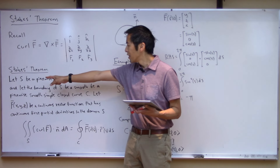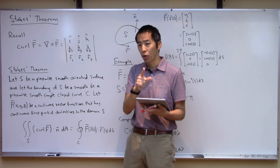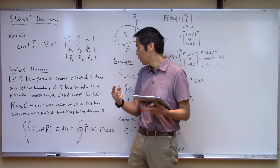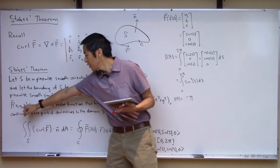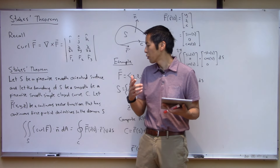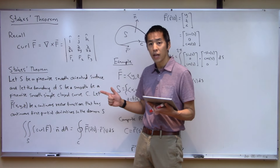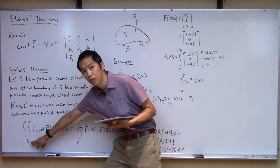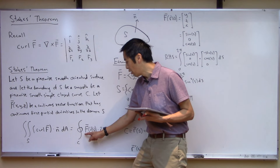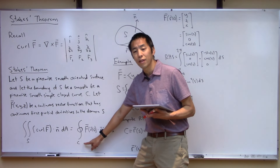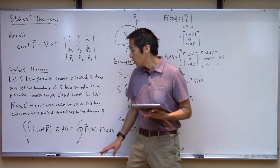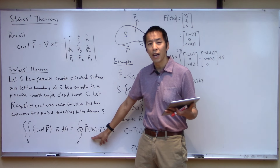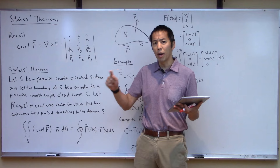Stokes' theorem says this. Let S be a piecewise smooth oriented surface — the oriented part is going to come into play in just a second. We're going to let the boundary of that surface S be another smooth piecewise simple closed curve, which we'll call C. Then we let F be a vector field that is some continuous vector function with continuous first partial derivatives on the domain of the surface S. If that's true, then taking the surface integral of the curl of the vector field over S is the same thing as taking the closed line integral around C.